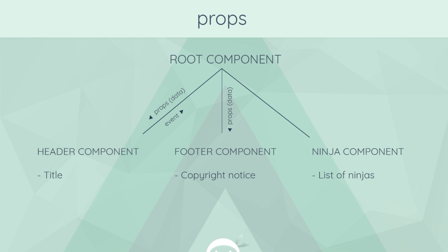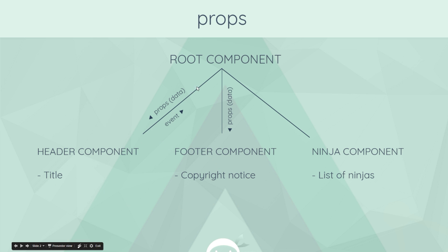The idea is that we create this new event bus and import it into both components. We can then communicate between them without the parent — by emitting an event on the event bus in one component, then listening to that event on the event bus in the other component. Therefore we don't have to go through the root component.